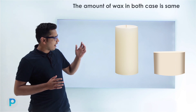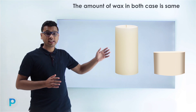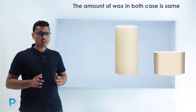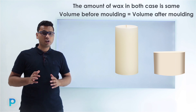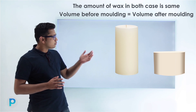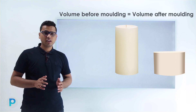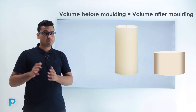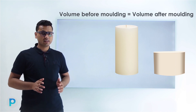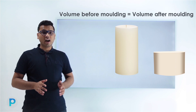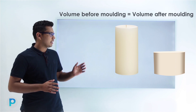You will agree that the amount of wax in the first case and in the second case is the same — or we can say that the volume before molding and after molding is the same. In these types of questions, the principle remains that the volume before and after molding remains the same.